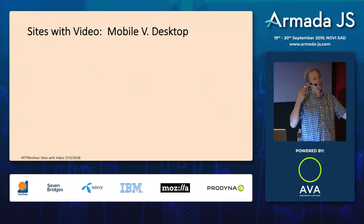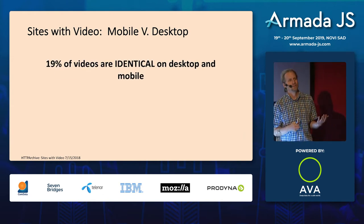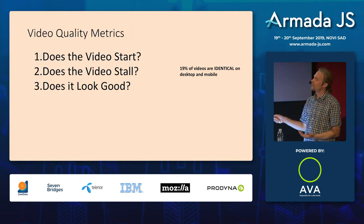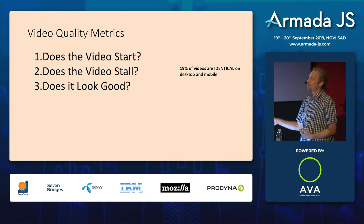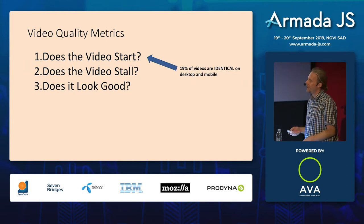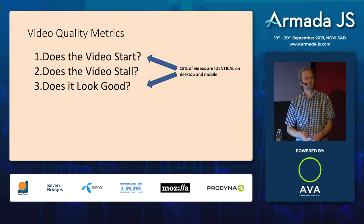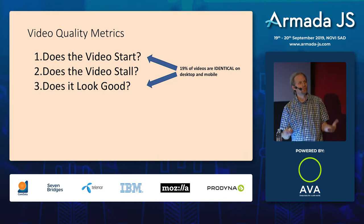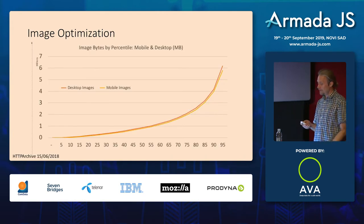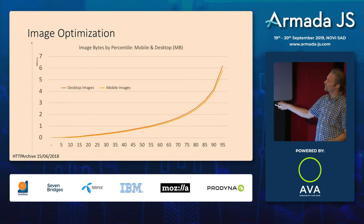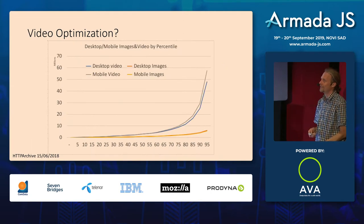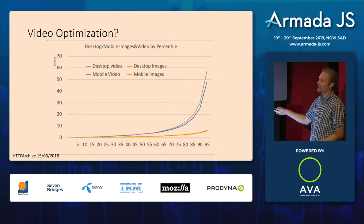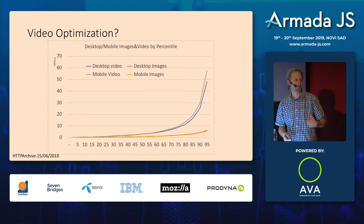Looking at desktop versus mobile websites, 19% of videos are identical — meaning you're either serving mobile-optimized video that starts fast on desktop, or serving desktop content to mobile devices where it looks great but takes forever to start on a slow connection. Honestly, most of it is optimized for desktop, so you're serving desktop videos to mobile devices. We don't do that with images — why would we do it with videos that are 10 times bigger?